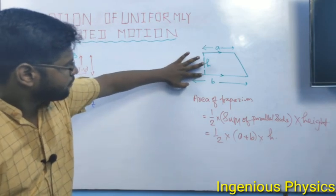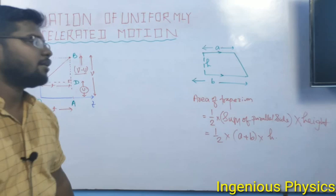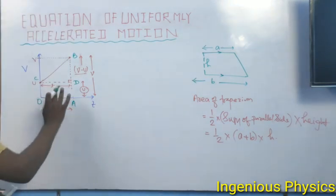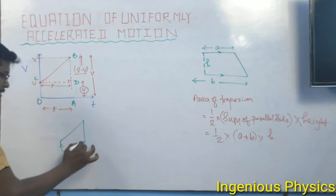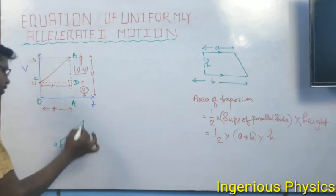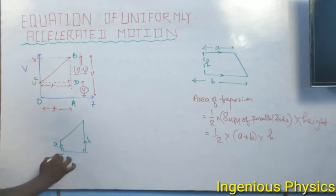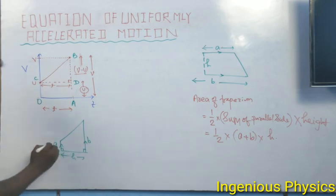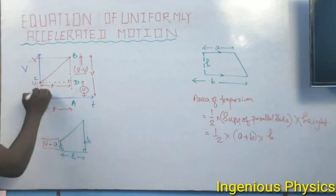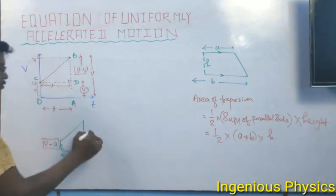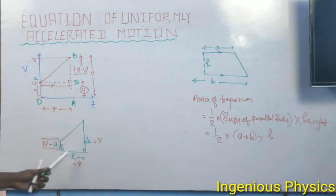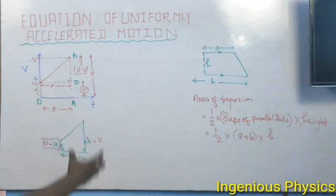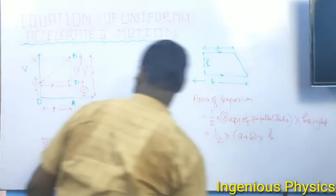The shape under the VT graph is a trapezium OABC. The two parallel sides are U and V, and the height is time T. We will directly apply the trapezium area formula to get the third equation.